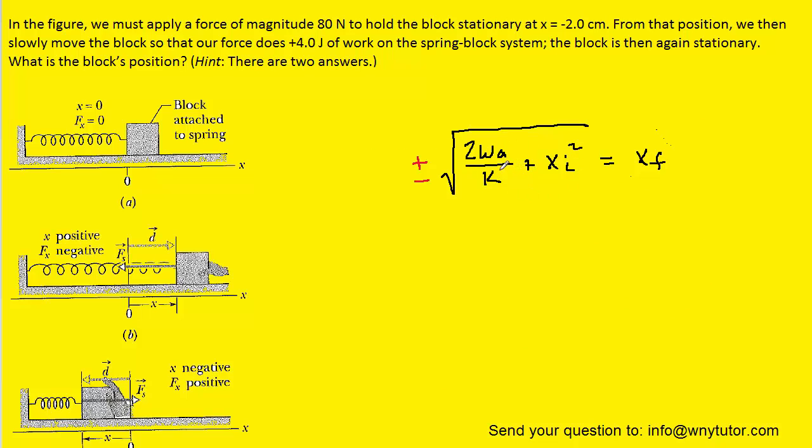We're now ready to plug in the given values. Notice that the applied work, or the work done by the applied force, was stated as positive four joules. K is the spring constant, which we can actually figure out by noting that K would be equal to the force divided by the displacement.